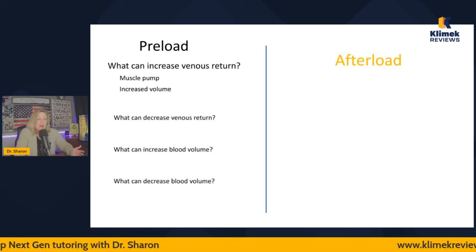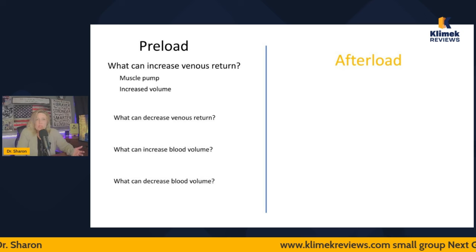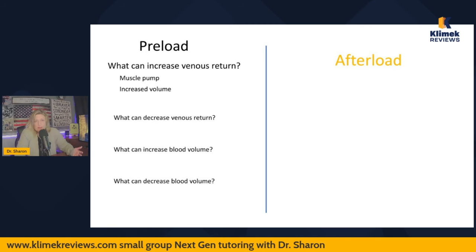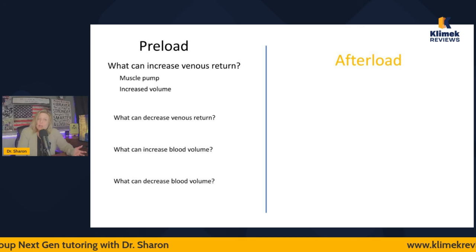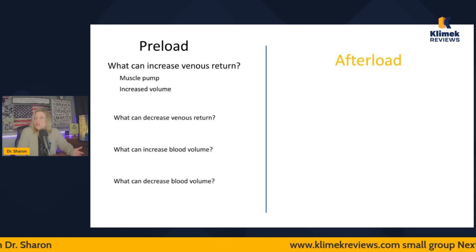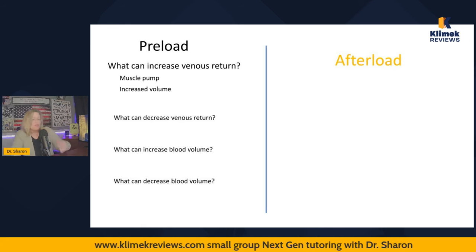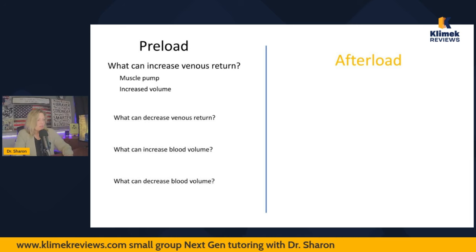To increase blood volume, you can give fluid — a bolus, like a thousand mL of normal saline. You can give blood, though that's not usually how we increase volume. We usually increase volume by giving crystalloids — things that are crystal clear, like saline or lactated Ringer's. To decrease venous return: inactivity — patients on bed rest have decreased preload.